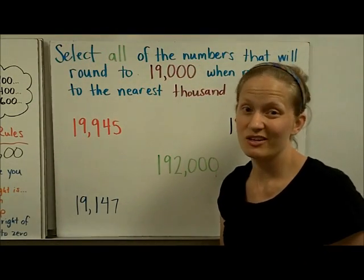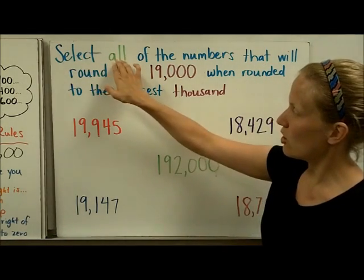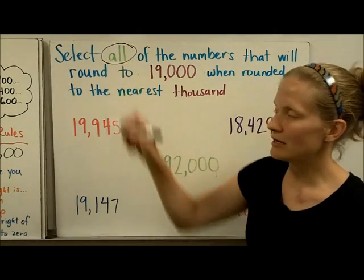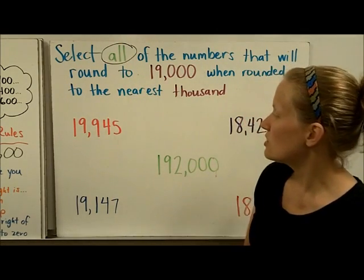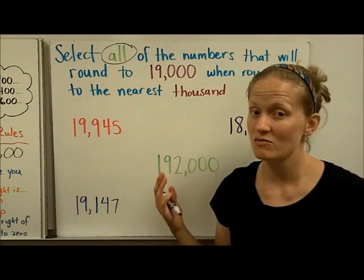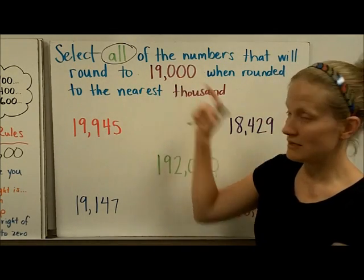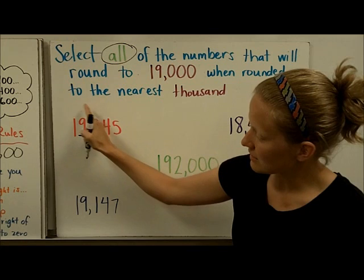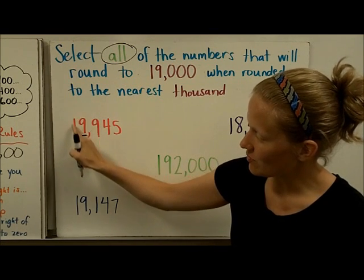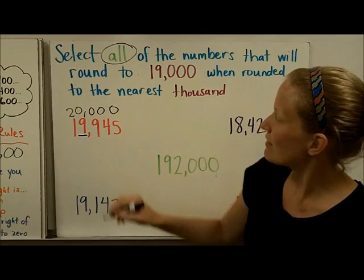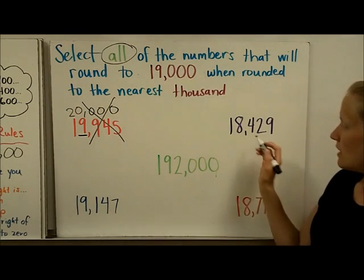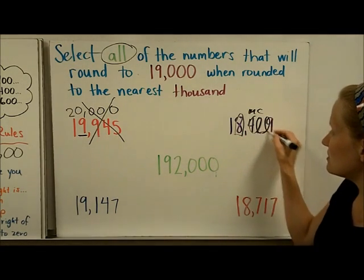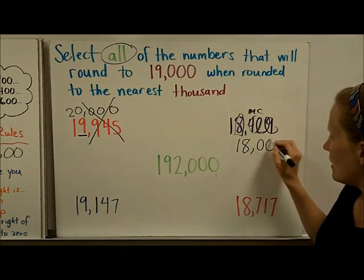Here's a common kind of problem that uses rounding skills: select all of the numbers that will round to 19,000 when rounded to the nearest thousand. Notice it says 'select all,' which likely means more than one answer. We'll go through each one — the easiest way is to round it to the thousands place and see if we get 19,000 as the answer. In the first one, rounded to the thousands place, this 9 is going to tell this 9 to go up — well, it can't — so it bumps the next digit up, and this number rounds to 20,000. Not the same, so we won't choose it. In the next one, this 4 tells the 8 to stay the same, so this rounds to 18,000 — too small.